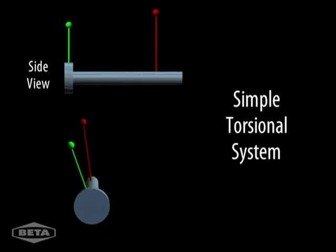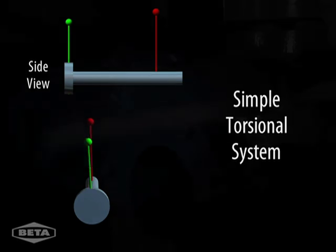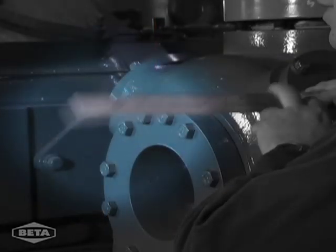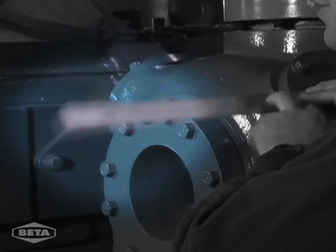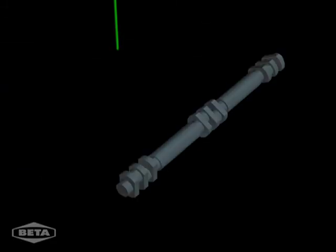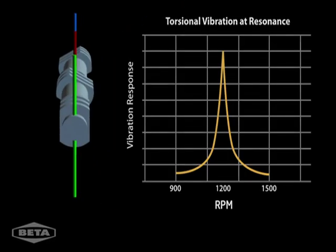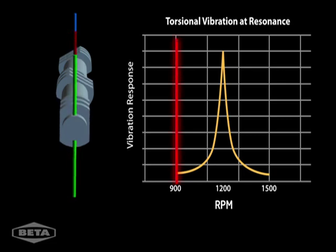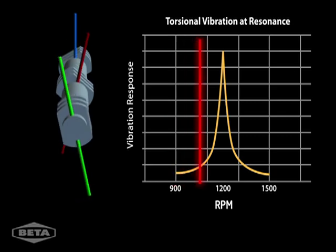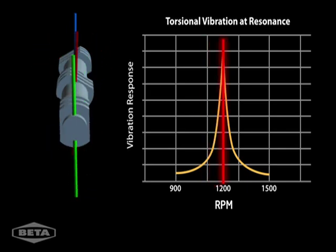After releasing the shaft, it rotates back and forth; this oscillation occurs at the torsional natural frequency. This is analogous to the mechanical natural frequency described in Module 1. Torsional vibration can occur especially if the system is resonant — in this example, the vibrations are low at 900 RPM, but as the speed increases, the system becomes resonant at 1200 RPM when the speed is at the TNF.